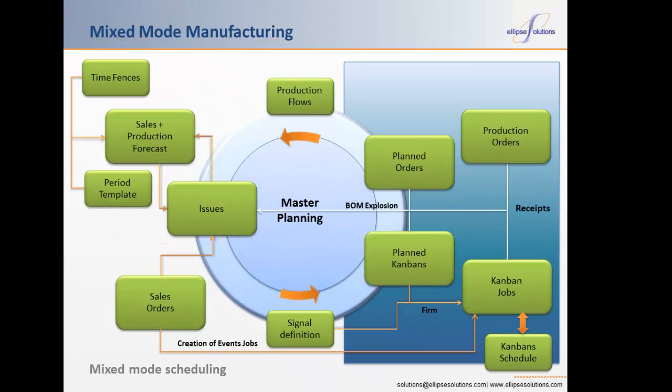Lean manufacturing can be introduced in different ways. While some companies apply the lean principles value stream by value stream, others take a more local approach and start with specific work cells. AX 2012 supports mixed mode manufacturing environments where both lean manufacturing and traditional manufacturing exist. Mixed mode scheduling within AX 2012 reconciles and manages planning approaches where a mixture of traditional production orders and Kanbans are used. AX 2012 has provided various Kanban scenarios to help link traditional MRP push and lean pull systems.